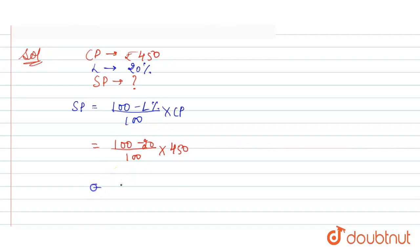So 100 minus 20 equals 80 divided by 100 into 450. Now both zeros cancel out, then 45 into 8 equals 360. So SP is rupees 360 and this is our required answer. Thank you.